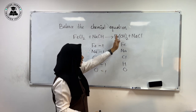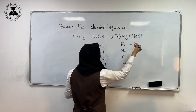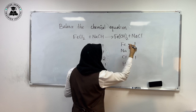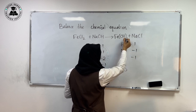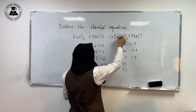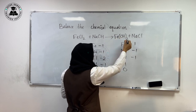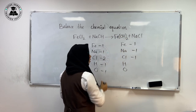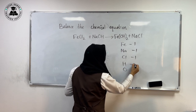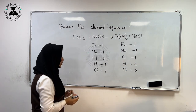On the right hand side: iron is also 1, sodium is 1, chlorine is 1, and hydrogen and oxygen are both 2. The bracket given to both oxygen and hydrogen indicates the number is common for both — so there are 2 hydrogen atoms and 2 oxygen atoms in the equation.